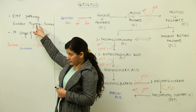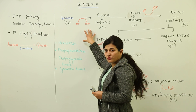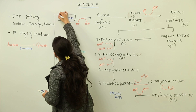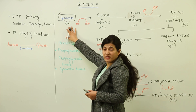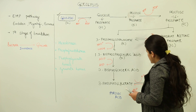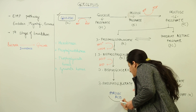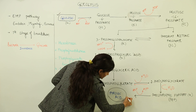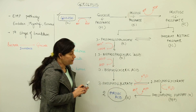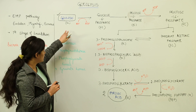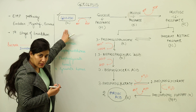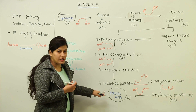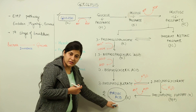Glycolysis is the first stage of glucose breakdown. We start from glucose, which is a six-carbon molecule. It undergoes certain steps and we obtain two molecules of pyruvic acid. Why two molecules? Because pyruvic acid is a three-carbon compound. Glucose is a six-carbon compound, and by the end of this process — where different enzymes are involved — we obtain two three-carbon pyruvic acid molecules.